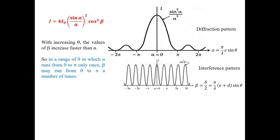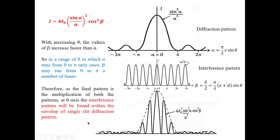In a range of theta in which alpha runs from 0 to pi only once, beta may run from 0 to pi a number of times. For example, beta = pi/2, then beta = pi, and alpha could go to pi at that point; then beta = 2*pi, beta = 2.5*pi, while alpha could only go up to 2*pi. Therefore, the final pattern is the multiplication of both patterns. At the theta axis, the interference pattern will be found within the envelope of the single slit diffraction pattern. This dashed line is the diffraction pattern envelope, and the original interference pattern is combined to give the final diffraction pattern by the double slit.